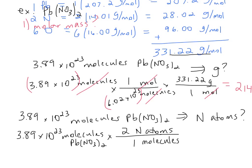In 1 molecule of Pb(NO3)2, there are 2 nitrogen atoms. So all we need to do is the math: 3.89 times 10 to the 23rd times 2, and we get 7.78 times 10 to the 23rd N atoms. That's how many nitrogen atoms are in 3.89 times 10 to the 23rd molecules of Pb(NO3)2.